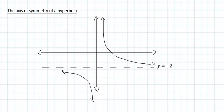In this video, we're going to look at the axis of symmetry of a hyperbola. An axis of symmetry is a line that divides a graph into two equal halves.